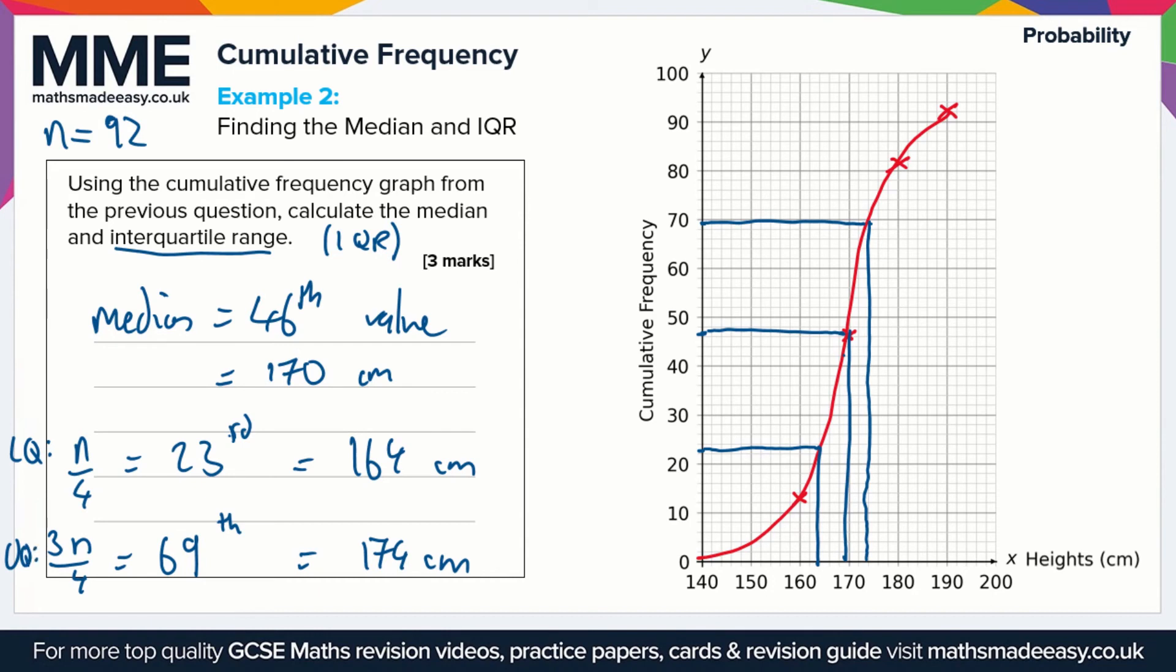So these are our upper quartiles and our lower quartiles. This is the lower quartile here, the upper quartile is the second one here. To get the interquartile range, we subtract the lower quartile from the upper quartile. The interquartile range equals upper quartile minus lower quartile, and that's going to be 174 minus 164, which is 10 centimeters. So our median is 170 centimeters and our interquartile range is 10 centimeters.